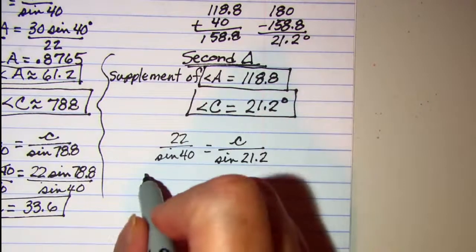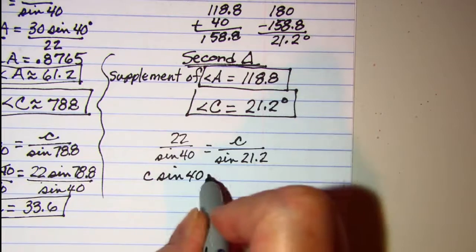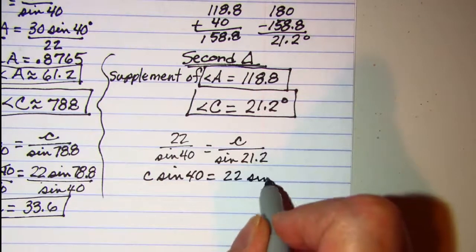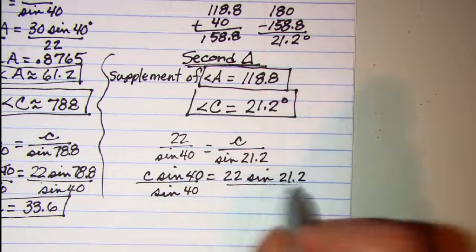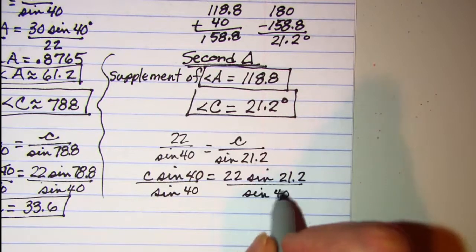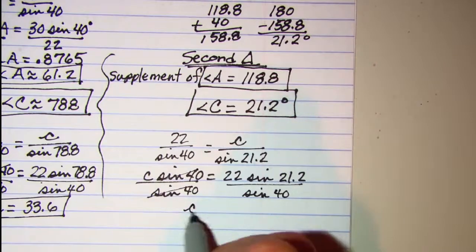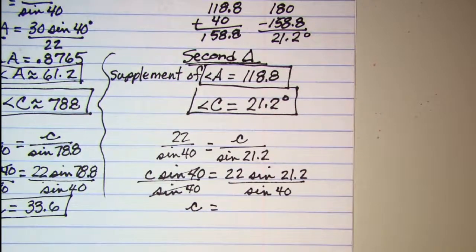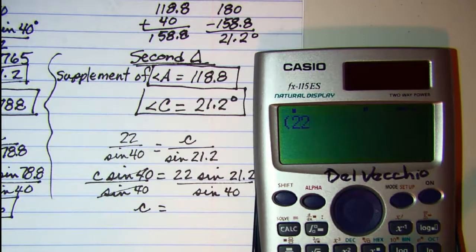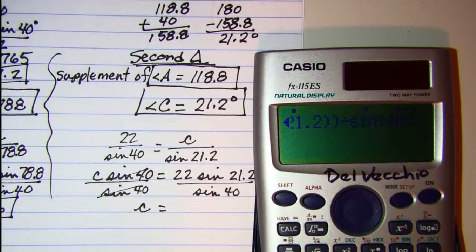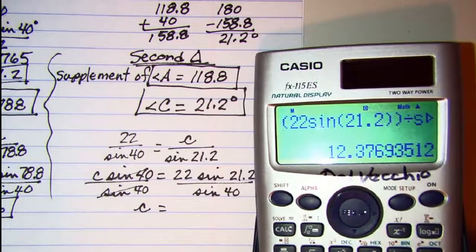And then let's work this one. We have C sine 40 equals 22 sine 21.2. Divide both sides by sine of 40. These cancel. And we have side C is equal to—open my numerator, 22 times the sine of 21.2, close the argument, close the numerator, divided by 40. And I have 12.4.